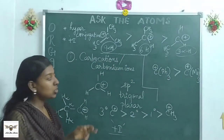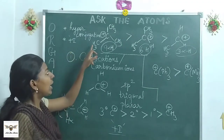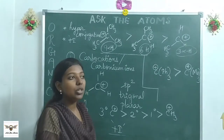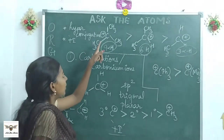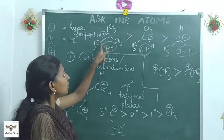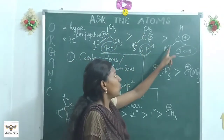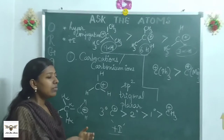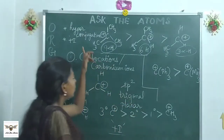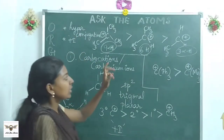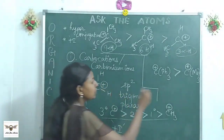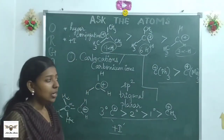The second factor is the +I effect: alkyl groups are electron-donating (electron-releasing) groups that show the +I effect, donating electrons to the carbocation and minimizing its positive charge. In tertiary, three alkyl groups donate electrons; in secondary, two; in primary, one. So more groups donating electrons means more stable carbocation. Both hyperconjugation and the +I effect confirm that tertiary carbocation is most stable, followed by secondary, primary, then methyl.